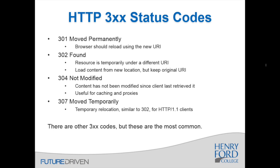304 is very useful in proxy situations because it tells you the content has not been modified since the client last retrieved it. Proxies can request with a timestamp and the server can confirm nothing has changed, so the client can use its cached copy. 307, moved temporarily, is similar to 302 but with added enhancements for HTTP 1.1 clients. There are several other 300 codes, but these are the most common.